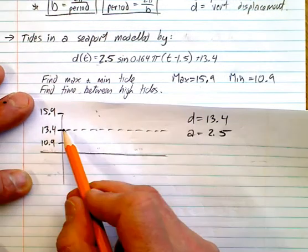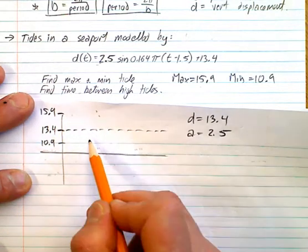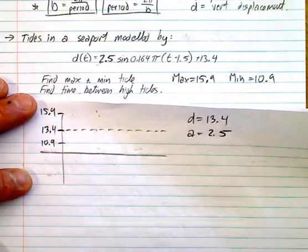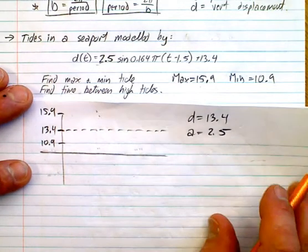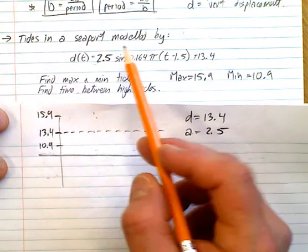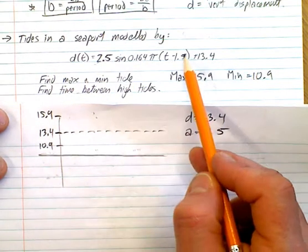Because it fluctuates from 13.4 up 2.5, down 2.5, up, down, up, down. And you get this periodic cycle. So this is how we're interpreting the values, the A, the B, the C, and the D.